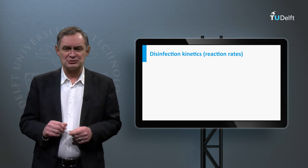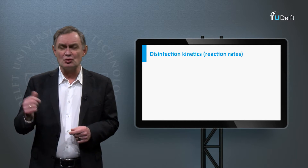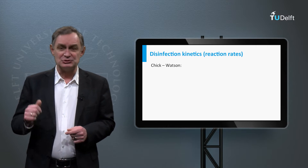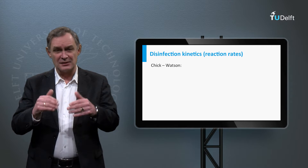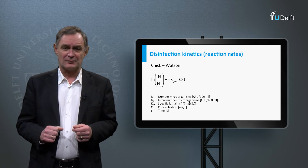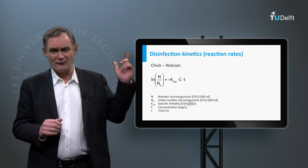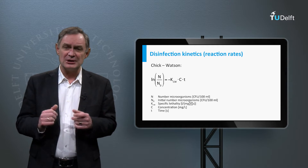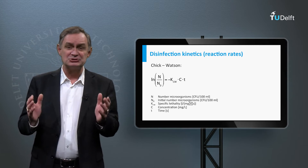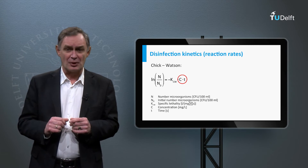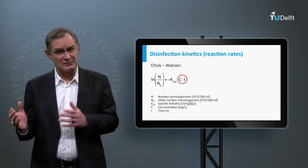Different models have been developed to describe the disinfection kinetics. The two most important are Chick's law and Watson's law. If those two are combined, the Chick-Watson equation is obtained. The natural logarithm removal of pathogens is thus assumed to be linearly proportional to the so-called CT value, which is the product of the concentration of disinfectant in the reactor and time.